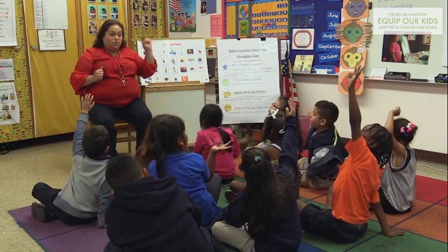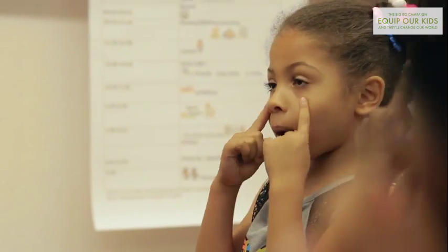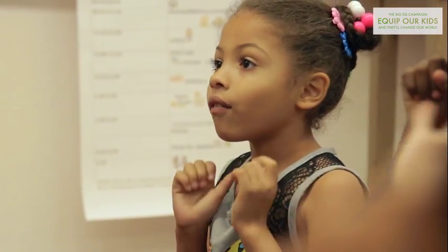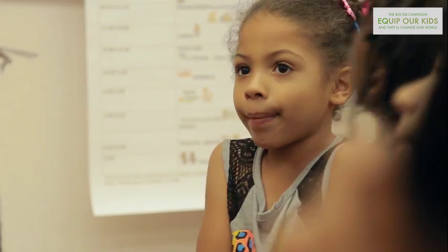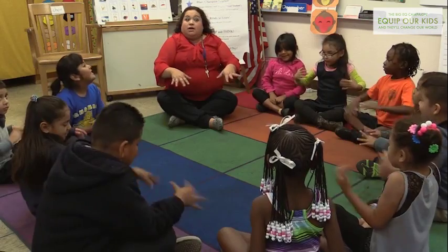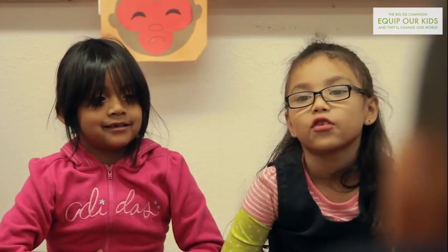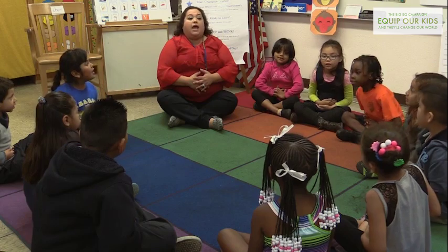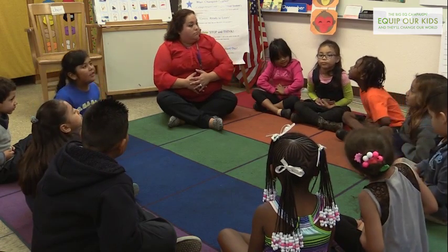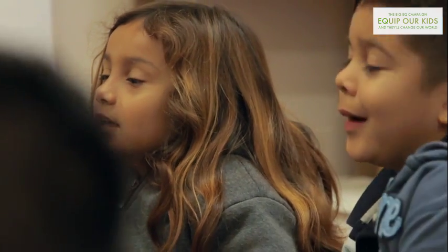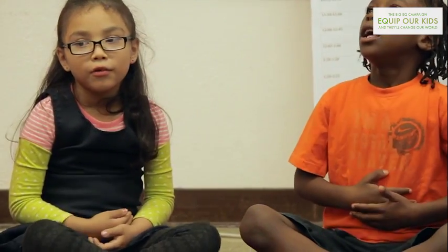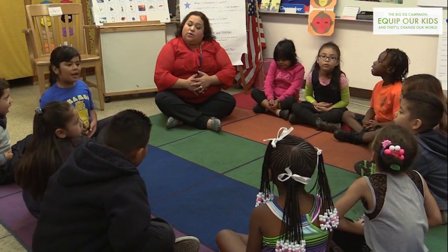One, two, three. Eyes watching, ears listening. Voices quiet and bodies still. It's time to put your hands on your tummy. Hands on your tummy. Then say stop. Say stop. Name your feelings. Name your feelings. Take a little breath. One, two. Calm right down. Calm right down.